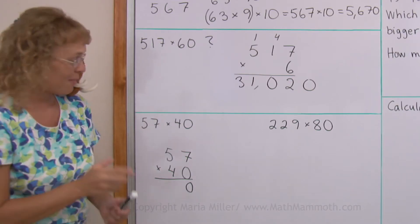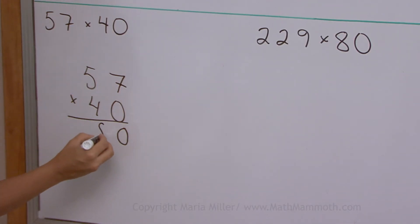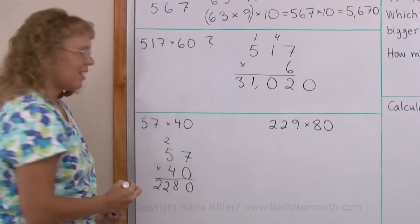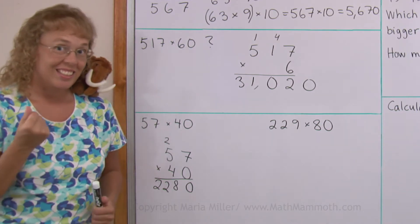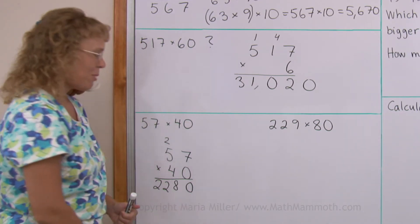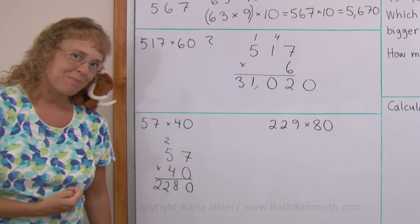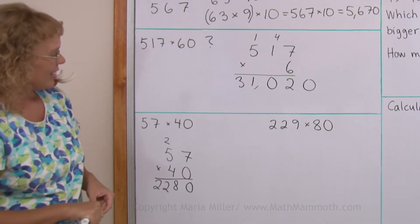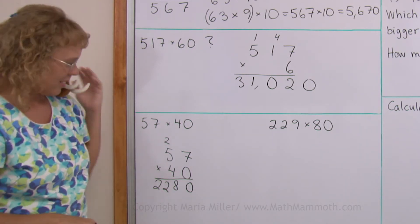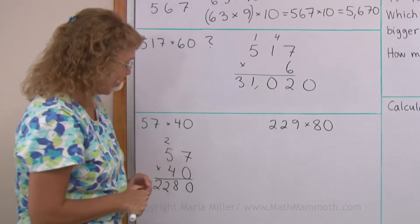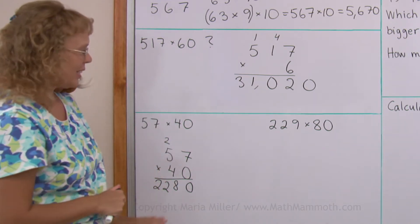Follow me thus far. 4 times 7, 28. 4 times 5 plus 2, 22. And now I didn't need to tag any zero in the end because I put it there in the beginning. So, is that Matthew? Now he's saying he likes that trick. Yeah, it's kind of handy, isn't it? Makes it easy.